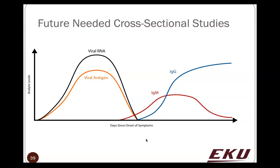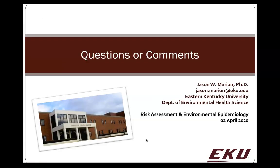Moving forward, future cross-sectional studies are needed that look at the serology or immunological responses of people to the coronavirus. This will be helpful in trying to open up the economy and for better protecting ourselves, our friends, and healthcare workers on the front lines. We'll discuss that in a future video. If you have questions, email me at jason.marion@eku.edu or text or call. Hope the rest of your day goes really well — that's all for now.